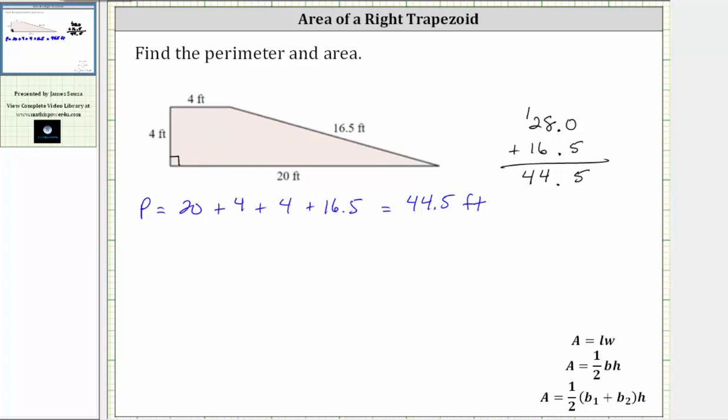But again, let's first use the area formula for a trapezoid. So we have the area is equal to one half times the sum of the two bases, where let's call base one the bottom base, base two the top base, and the height is going to be four feet. So again, we have one half times the sum of the bases, which gives us 20 feet plus four feet, and then times the height of four feet.